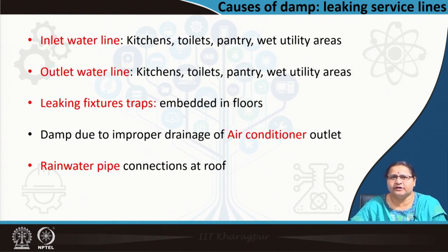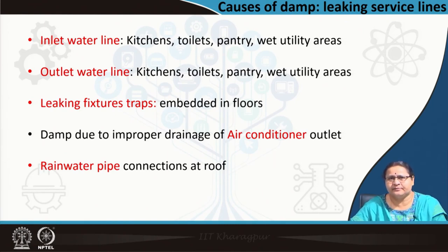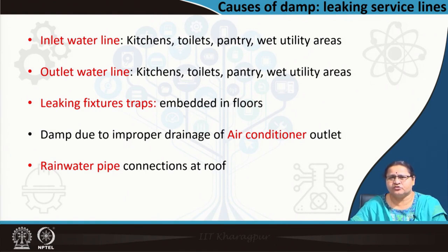Sometimes fixture traps are embedded in the floors, and leakages in the traps at the joints can also lead to damp and allow entry of moisture into the structural floor. So one has to be very careful about leaking fixture traps. Another cause in buildings is improper drainage of air conditioners — the water that comes out needs to be properly drained from the air conditioner; otherwise that may also lead to localized damp, creating damage to the structure. Another cause is rain water pipe connections at the roof. When you become an architect, you must be able to identify the reason behind a particular damp and take action.